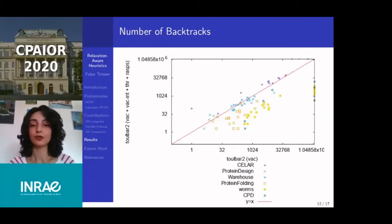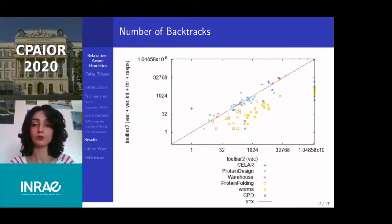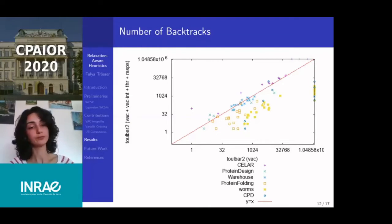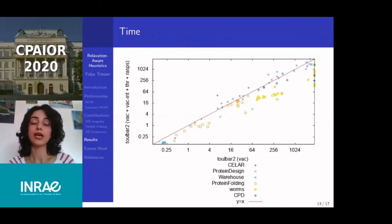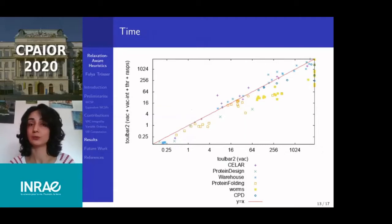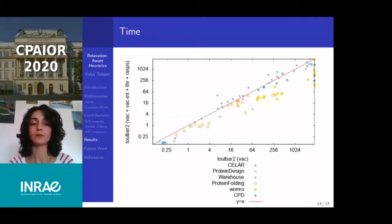A scatter plot for the number of backtracks compares Toolbar 2 with default options versus Toolbar 2 with our algorithms. For instances below the diagonal line, our algorithm leads to a smaller number of backtracks, showing a significant reduction in search tree size. Another scatter plot for computation times shows the gain is still present, although not as significant as for backtracks. This is due to an indirect effect: with the branching heuristic, we generate sub-problems on which the VAC algorithm converges more slowly.